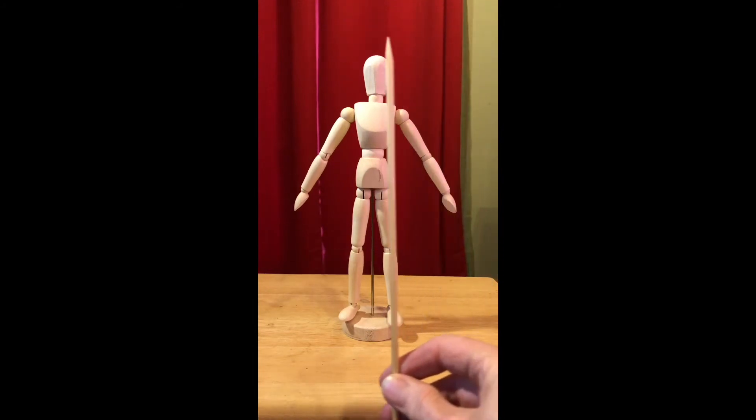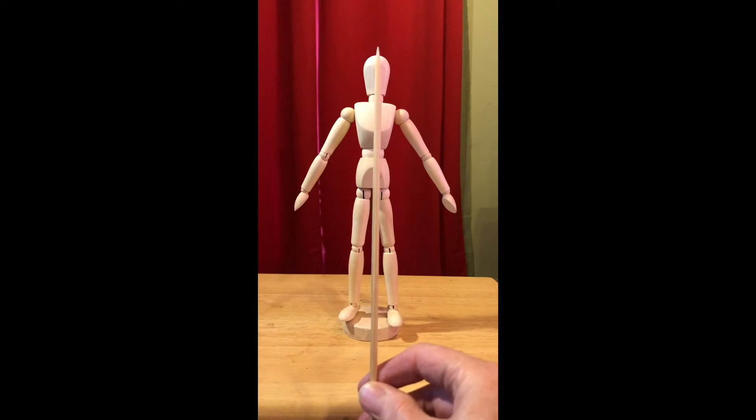If you notice our mannequin is pretty much vertical. If I put my stick right down the spine of the mannequin you can see that the mannequin is standing straight up. However the mannequin's arms are at an angle.